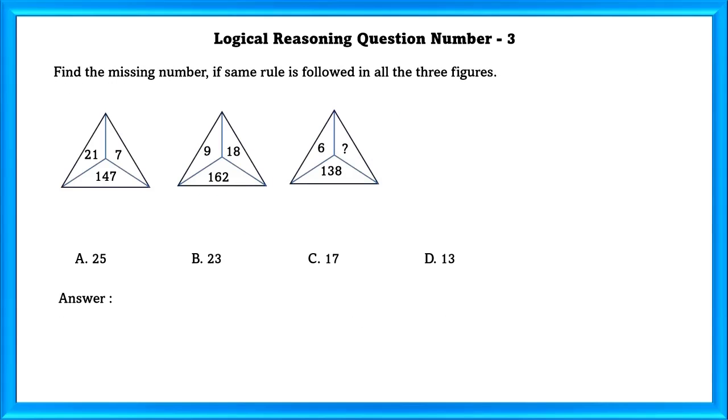Logical Reasoning Question Number 3. Find the missing number if same rule is followed in all three figures. Well, 21 into 7 is equal to 147 and 9 into 18 is equal to 162. So what into 6 is equal to 138? 6 into 23 is equal to 138. So our answer is 23.